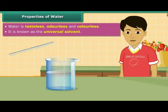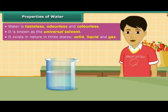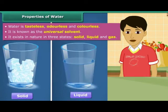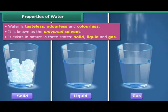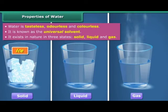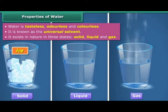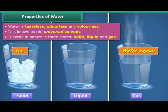Water exists in nature in three states: solid, liquid and gas. In solid form, water is known as ice or snow. In gaseous form, water is known as water vapor or steam.